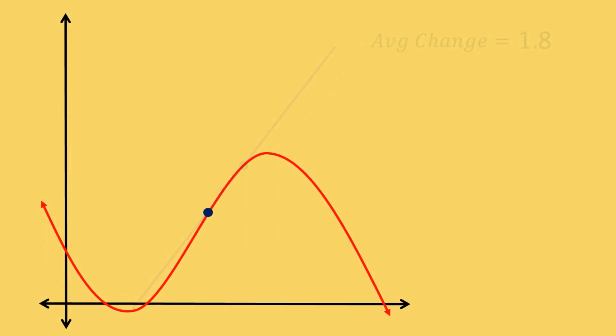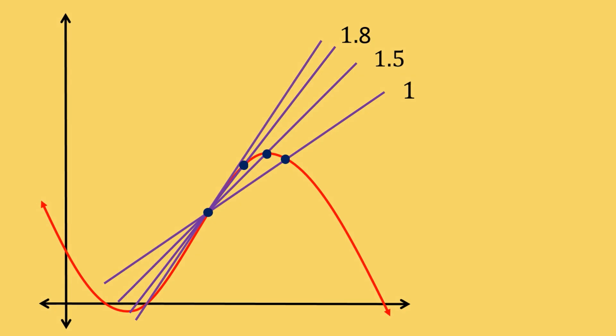As we continue to move the second point we are getting different values for the rate of change. Even though they are changing they seem to be getting closer to a limiting value. In fact it appears they are getting close to the number 2. Let's move them closer still to see if this is the case.